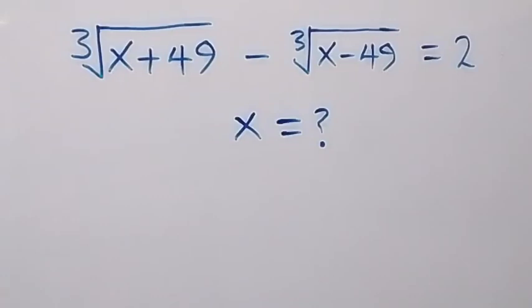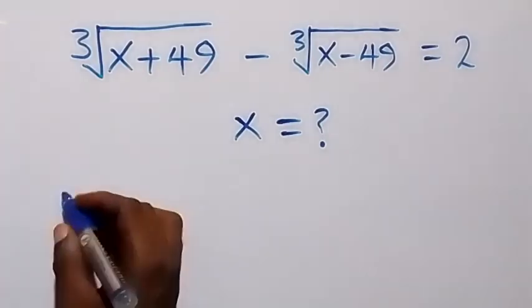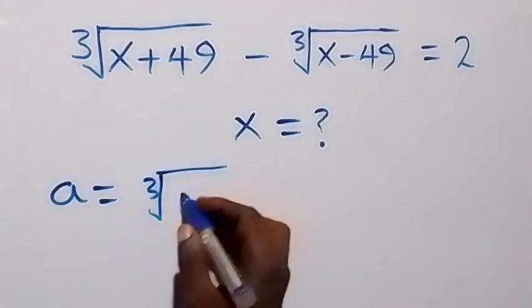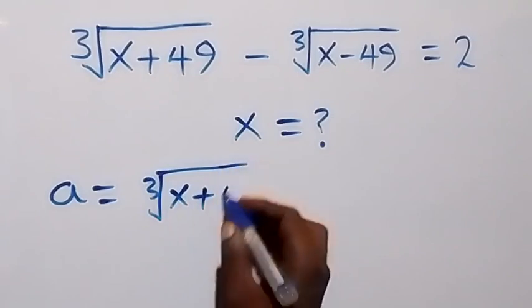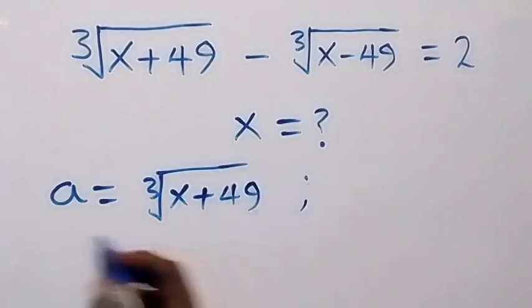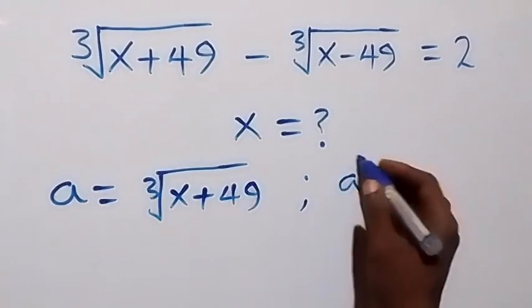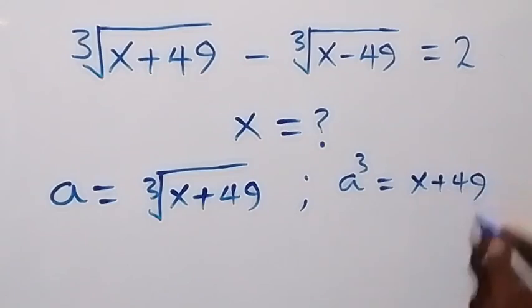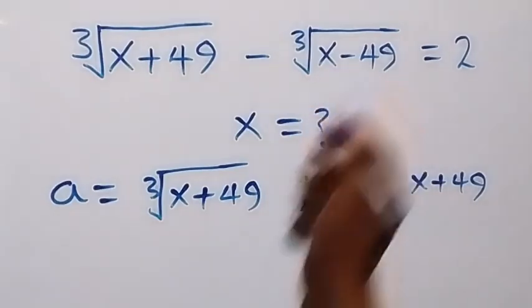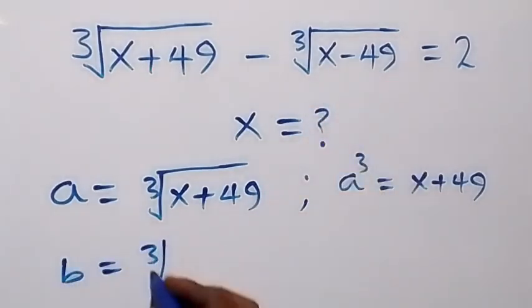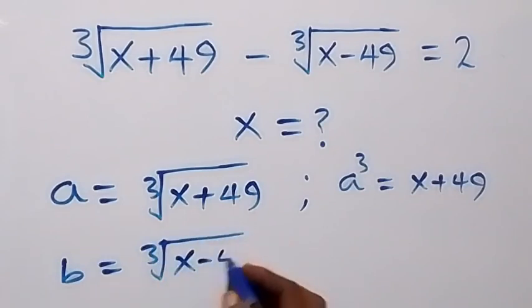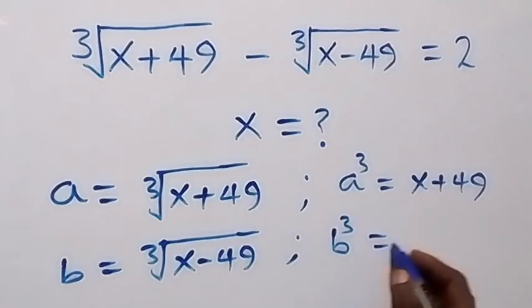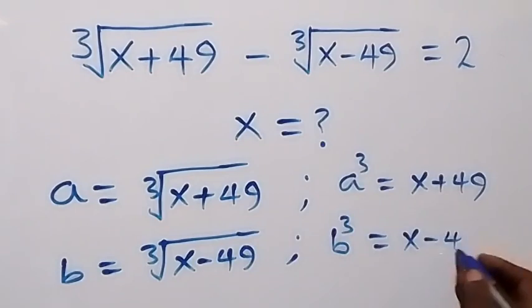Hello y'all, welcome. How to solve for X in this nice math problem. Let A be equal to the cube root of X plus 49. Then when we take the cube on both sides, A raised to power 3 will now be equals to X plus 49. And also let B represent the other one — B equals to cube root of X minus 49. Then B cubed will now be equals to X minus 49.